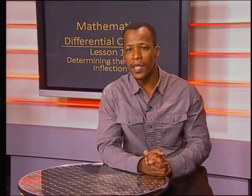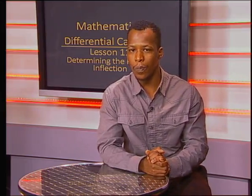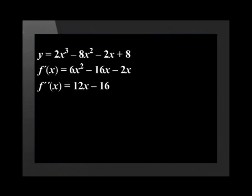We find the second derivative by using the same method as before. Therefore, the second derivative, f double dash of x, is equal to 12x minus 16.